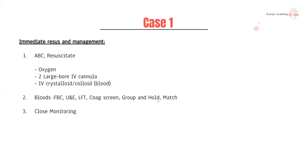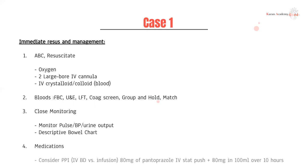In terms of medications, consider a PPI. In most cases of acute bleeds, we give 80 mg of pantoprazole IV stat, then another 80 mg over 10 hours in 100 mL solution. You don't need to memorize these numbers, but they're included here for completeness.